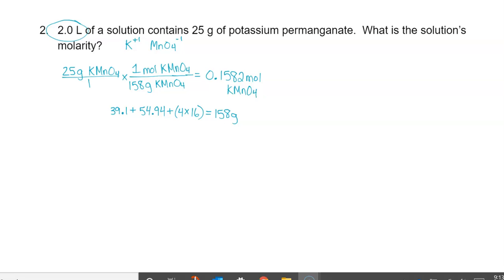Now this isn't our final answer. We do need to substitute this value into our molarity equation. Molarity equals moles over liters. If we substitute in our numbers, we have 0.1582 moles divided by 2.0 liters. Moles divided by liters will give us our molarity. Let's divide this out: 0.1582 divided by 2 gives me 0.0791.